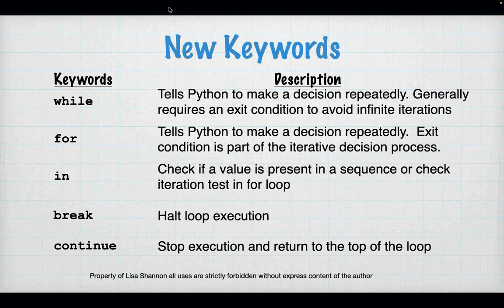While and for loops are both very important. A while loop will be your gameplay loop, and you'll have two exit conditions: one where you can type 'quit' or 'exit' to stop, and one where the player won or lost and the game decides to stop. We also have a new keyword 'in', which checks if a value is contained in a sequence. Break stops the loop entirely, and continue stops the current execution of the loop body but goes back to the top.